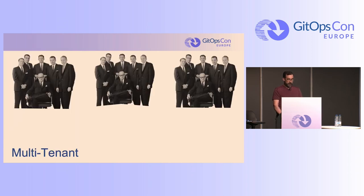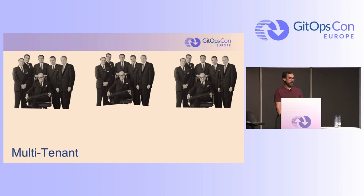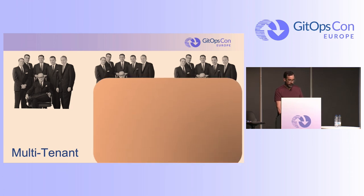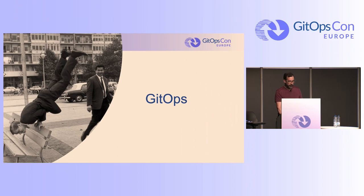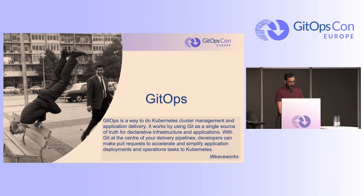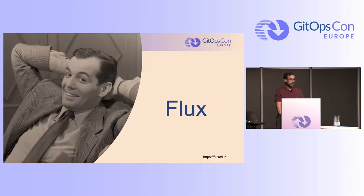More importantly, we have different product teams that we wanted to have completely full ownership of their infrastructure and applications. So we also needed a way to configure the roles and the tenants themselves. For that, we used GitOps — more specifically, Flux.